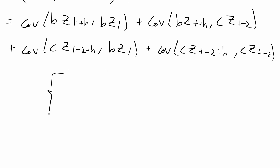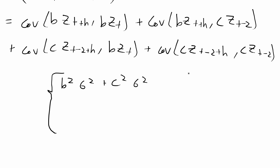Now I determine the autocovariance for any lag h. When h equals zero, we have the covariance between b*z_t and b*z_t, which is b squared times the variance of z_t, equal to b²σ². The covariance between z_t and z_{t-2} is zero. For the last term, c²σ². So when h equals zero, the autocovariance is b²σ² plus c²σ².